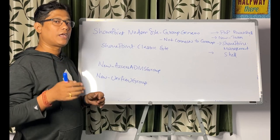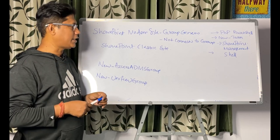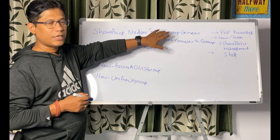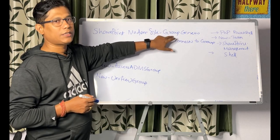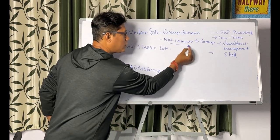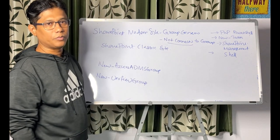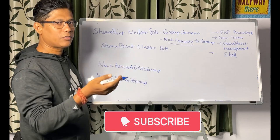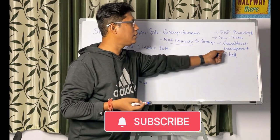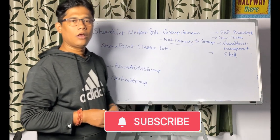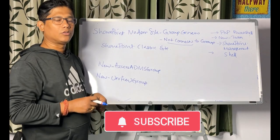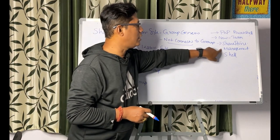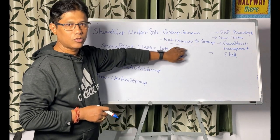First, understand that we can create two types of modern SharePoint sites: one is a group-connected site and the other is a site not connected to a group. While creating a site using PowerShell, there are a couple of tools you can use — one is the SharePoint Online Management Shell, and you can also use PNP PowerShell.